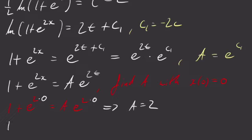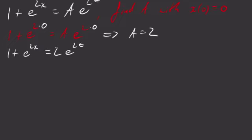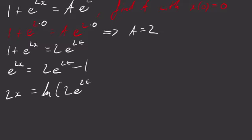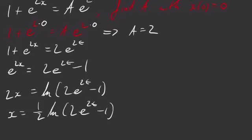Which means I have 1 plus e to the 2x equals 2 e to the 2t. So e to the 2x is 2e to the 2t minus 1. 2x is equal to the natural logarithm of 2e to the 2t minus 1. Now again, I don't need mod signs here because this is strictly positive. So I encourage you to prove that to yourself. Then I divide by 2 and I get x is 1 half natural log 2e to the 2t minus 1 meters.